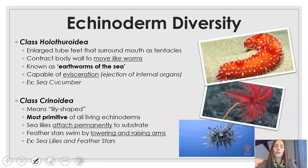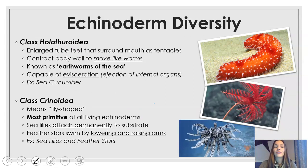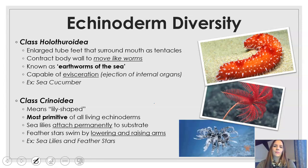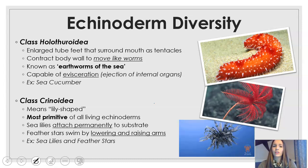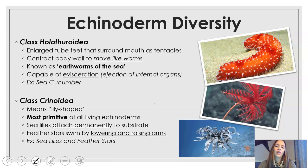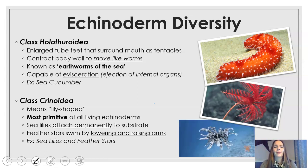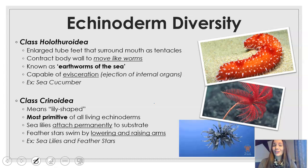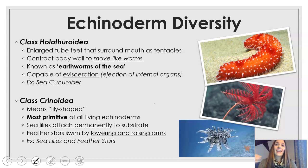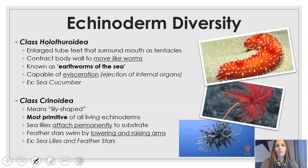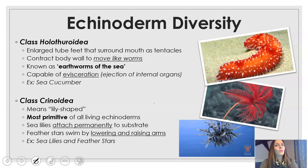Class Holothuroidea are the sea cucumbers, and these are pretty cool. At first glance you wouldn't expect them to be related to sea stars or brittle stars, but they do have tube feet that are enlarged and go around the mouth like tentacles. They move like worms and are actually known as the earthworms of the sea because they feed on the bottom and turn over the seafloor, much like earthworms do on soil.